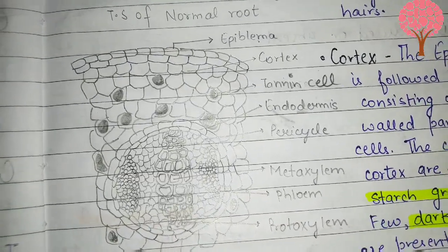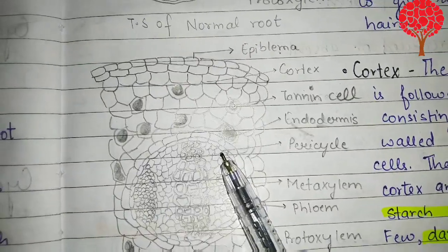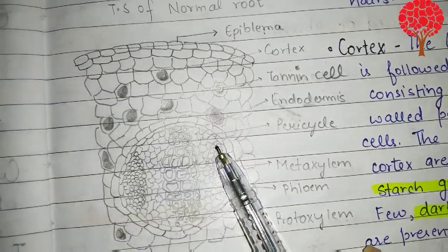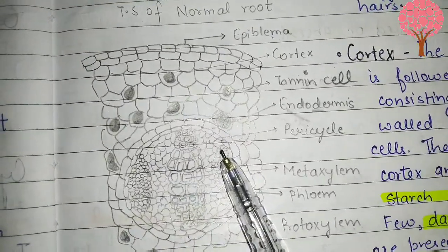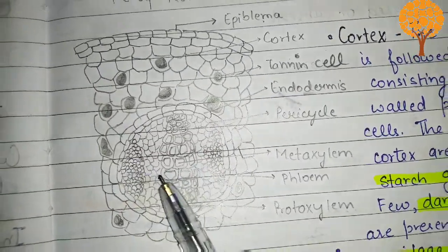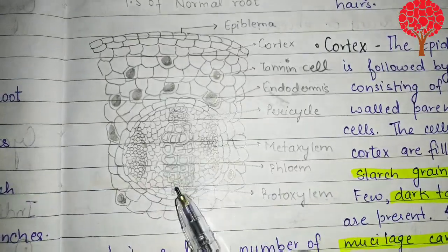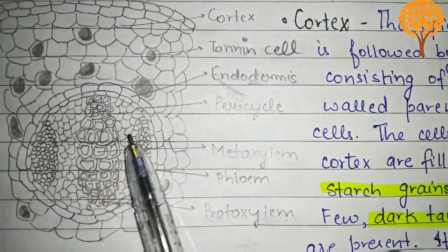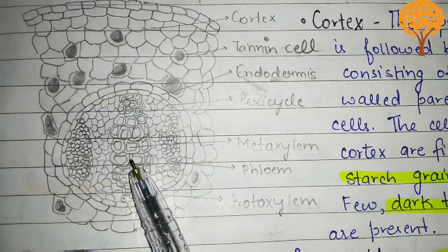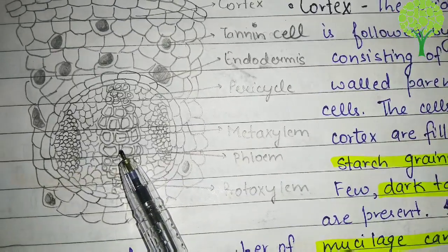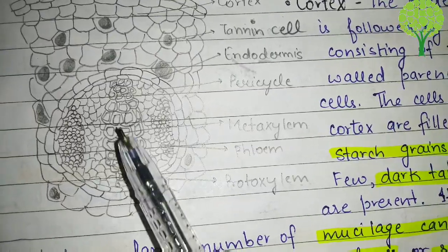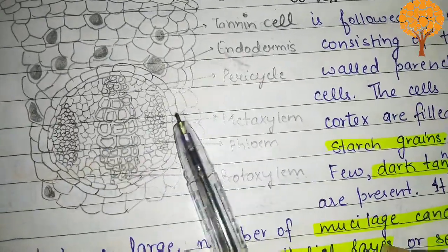After endodermis, we have a multi-layered pericycle filled with starch grains — it is parenchymatous, thin-walled, and multi-layered. Other than that, we have the vascular bundles. The vascular bundles are radially arranged. Here we can see a diarch condition present in the vascular bundle; they may be diarch to tetrarch, and may also be polyarch. Here we can see an exarch condition because it is a root.